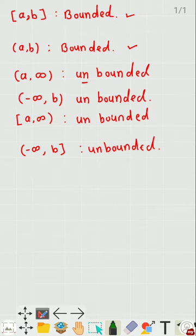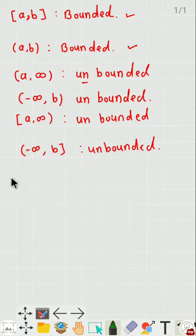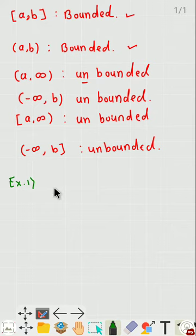Some functions defined on a closed bounded interval are bounded, and some functions which are defined on a bounded interval may or may not be bounded. Let us take one example. Example number 1: let f be a real-valued function defined on a bounded interval.